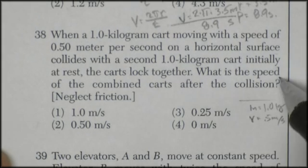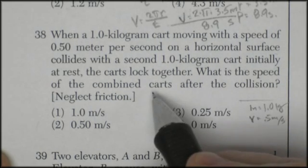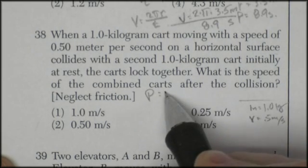It collides with a second 1 kilogram cart initially at rest. The carts lock together. What is the speed of the combined carts after the collision? Well, this is a conservation momentum. The momentum before a collision is equal to the momentum after.